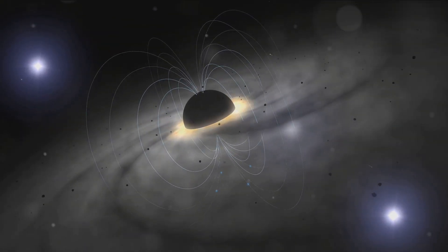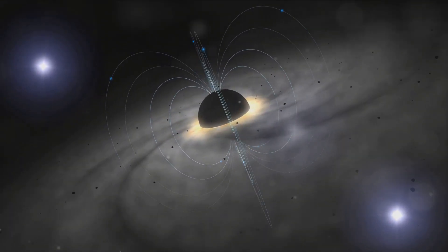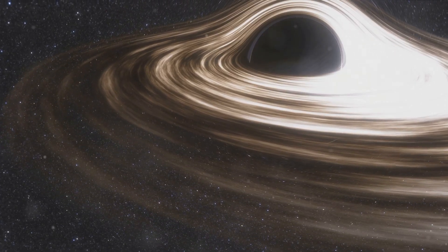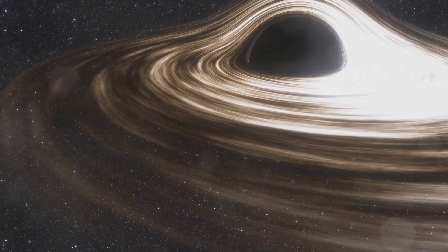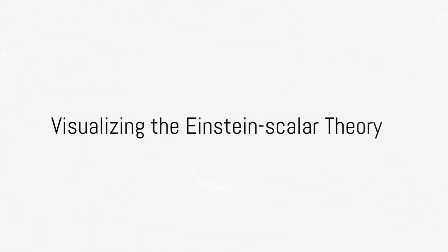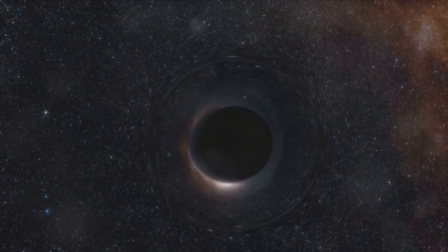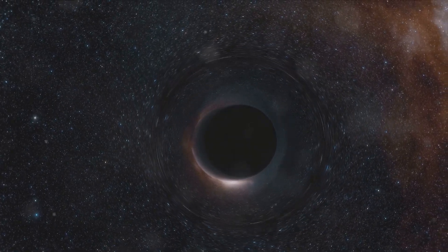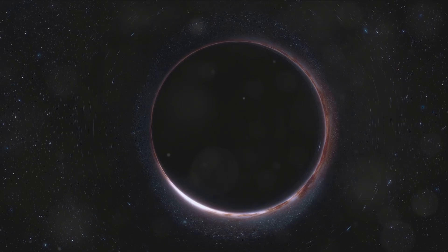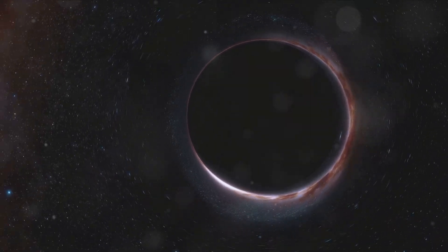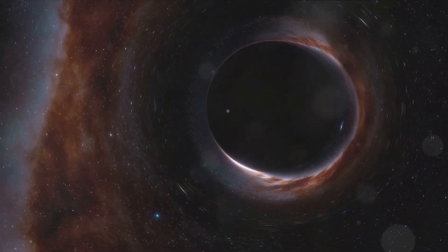The Einstein Scalar theory introduces a new scalar field, a kind of energy field that exists everywhere in the universe. This scalar field interacts with matter and energy, influencing the structure of space-time itself. Think about the bowling ball on the trampoline again. Now imagine that the trampoline is submerged in water. The water represents the scalar field, subtly influencing the curvature caused by the bowling ball.